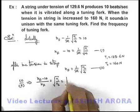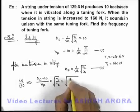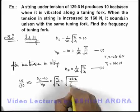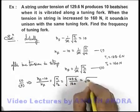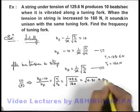If we substitute the values this will be square root of 129.6 by 160, which will result under the root of 0.81, which is 0.9.